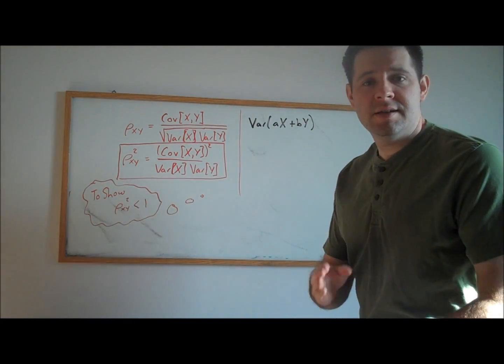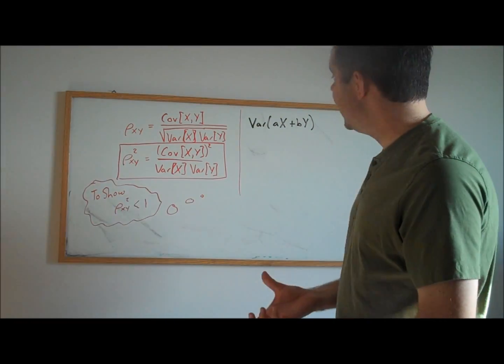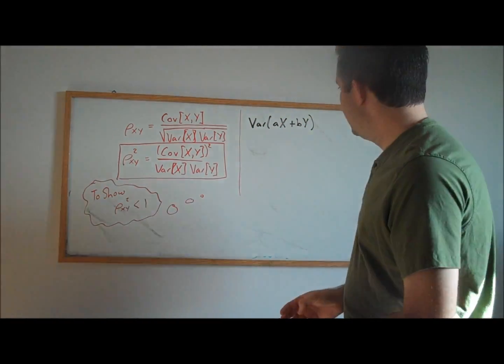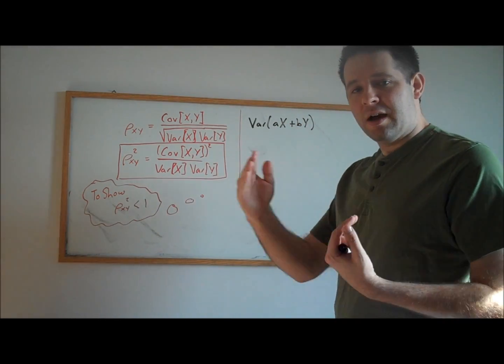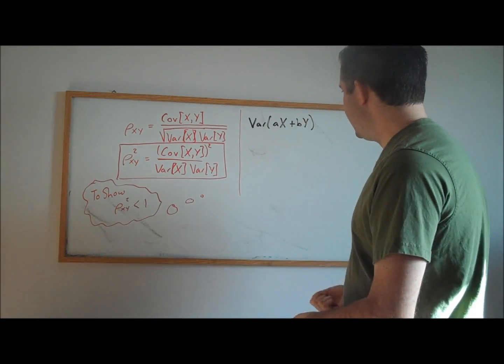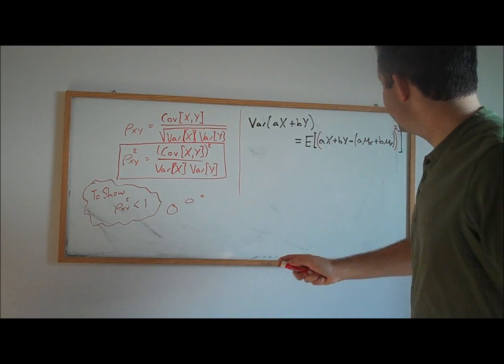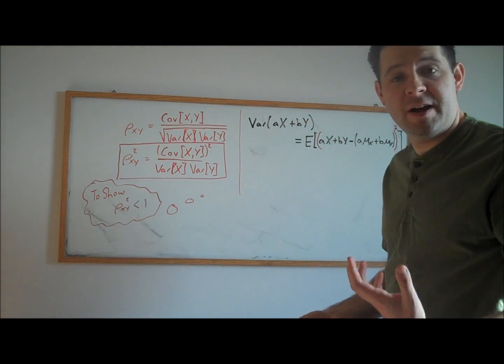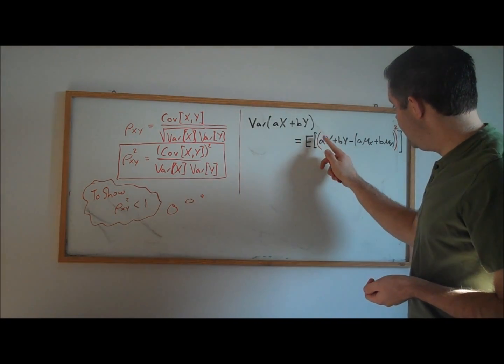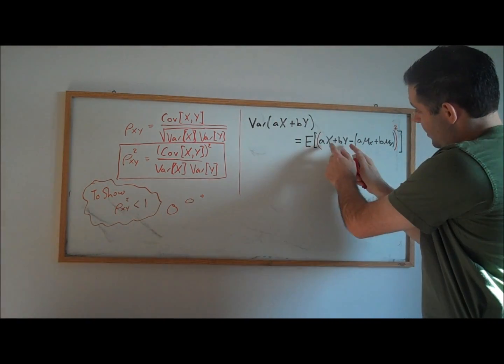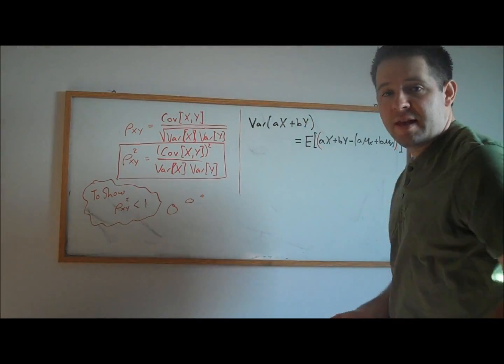a and b are constants, x and y are elements of a random vector. We can compute the variance of this function of a random vector by just taking this function of the random vector, subtracting off the mean of that function, squaring it, and computing the expectation of that. And so that's what this expression here does. We just plug in what the variance of a function of a random vector is. That's just going to be the expectation of the function of the random vector, minus its mean, and then we square that difference.